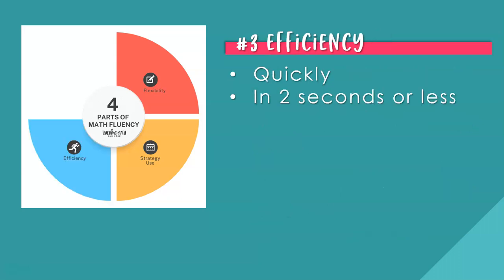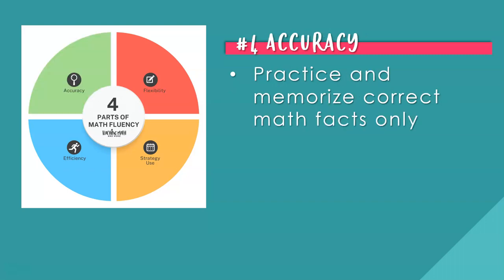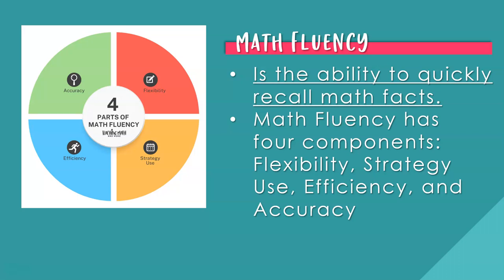Part three of math fluency is efficiency. Specifically, when we are talking about math fluency of math facts, it is done quickly — in two seconds or less to recall one math fact. As this continues to extend into middle school, math facts for grade six and beyond will also need to be recalled quickly. Part four of math fluency is accuracy — it's the last part and probably the most important one. Practicing and memorizing to know that a math fact is correct and accurate. You can see when all the math fluency parts are together how it completes the student's ability to master math fluency.